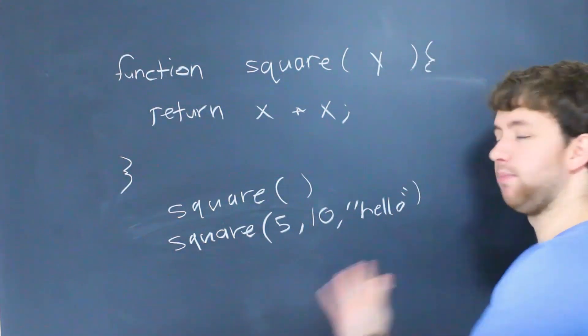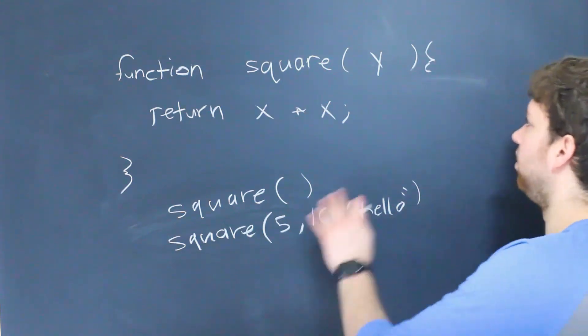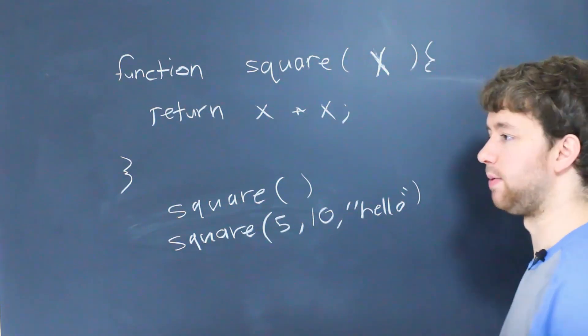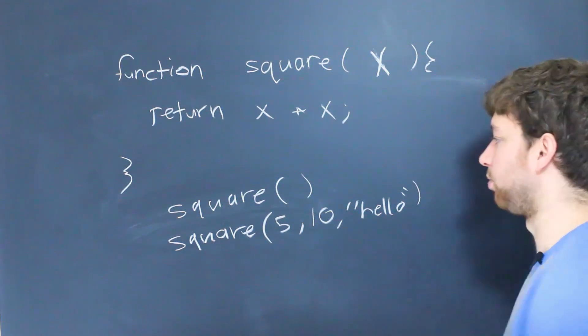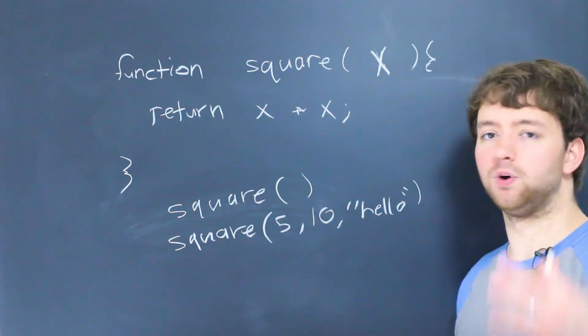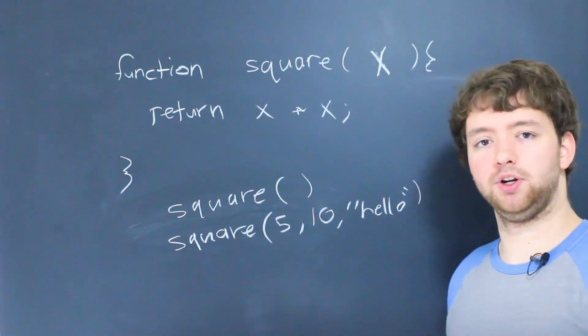How is it possible that we can pass in multiple things, even though it's only accepting one up here? This is in contrast to many more strict languages. So if you're coming from C++ or C Sharp or Java or something, this is not something you can do. So it might be a little bit weird if you're new to JavaScript but have some other coding experience.